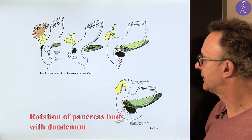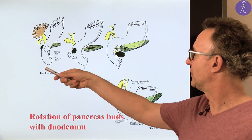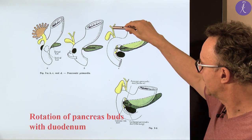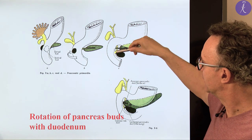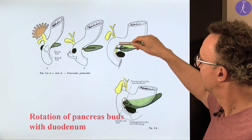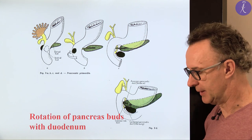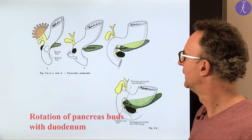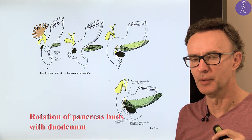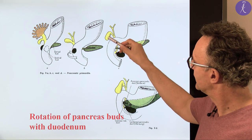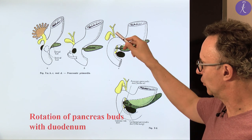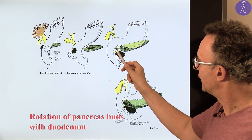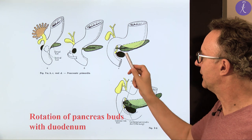The pancreas develops from a ventral and dorsal bud. The ventral bud rotates more and they unite. At the same time, the liver bud gives the intra- and extra-hepatic duct epithelium lining plus the hepatocytes. Don't forget: all these structures — including the cystic duct and the epithelium lining of the gallbladder — are from the endoderm of the foregut. The common bile duct unites with the duct of the ventral pancreatic bud.